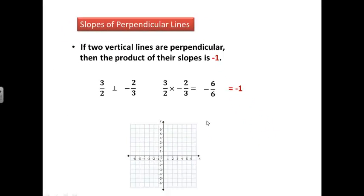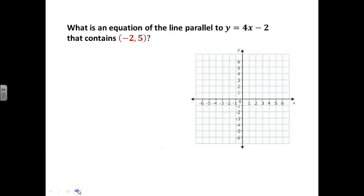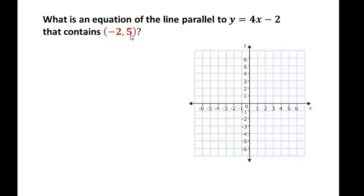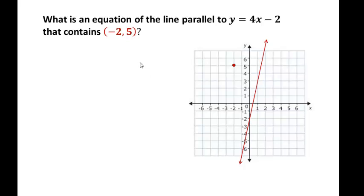The main point of this video is to write a new equation of a line given some information. First: what is an equation of the line parallel to y equals 4x minus 2 that passes through the point negative two, five? We graph the given line with y-intercept negative two, going up four over one. We then plot the point negative two, five, and we want a parallel line through that point.